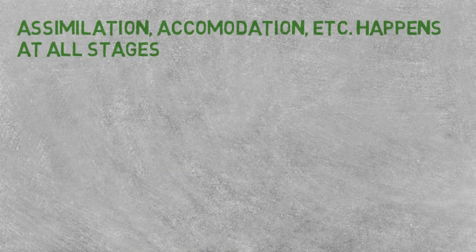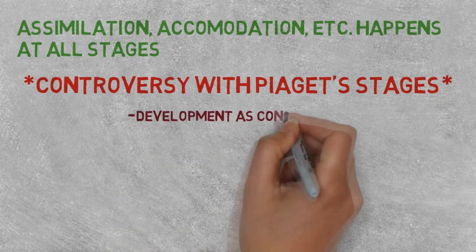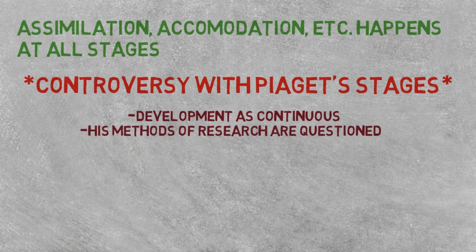I should emphasize that everything covered so far happens in every developmental stage. Piaget's focus was children, however his theory generalizes to adults. I'm not going to go into Piaget's stages due to some controversy—some psychologists view his stages as unnecessary and development as continuous, some question his methods of research, and others question whether the stages could be generalized to non-Western populations.